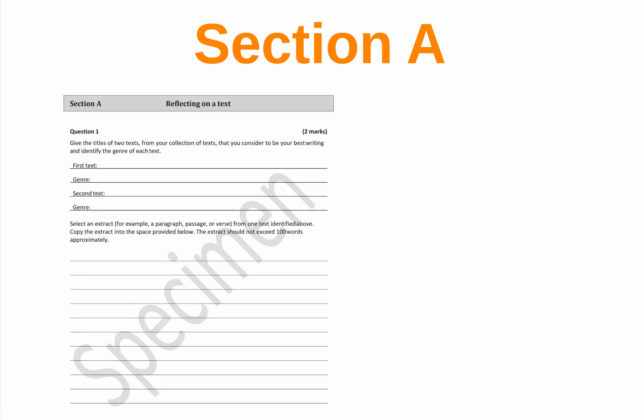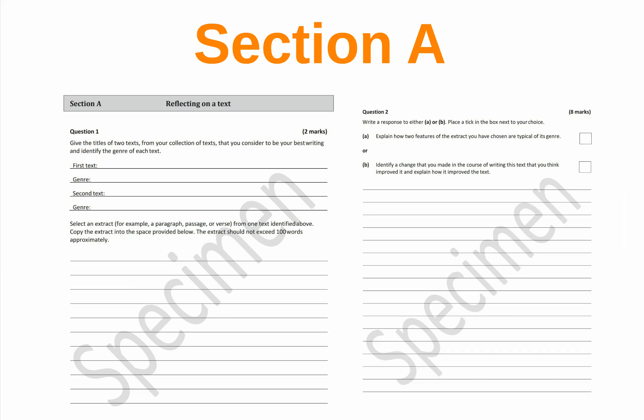So what does the booklet ask students to do? In section A, students write in the titles and genres of their two best texts. They select a short paragraph, passage or verse from one text and transcribe it into the booklet. Then they reflect on the short sample of their writing, either identifying two features in their paragraph, passage or verse which make it typical of the genre, or identifying a specific change they made while writing this text and discussing how that change made the text better. Each student's answers will be unique because each student will be writing about their own writing and specific features they can see in their own text.